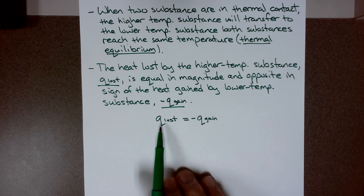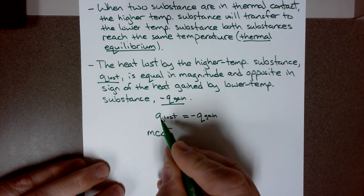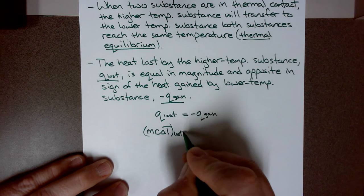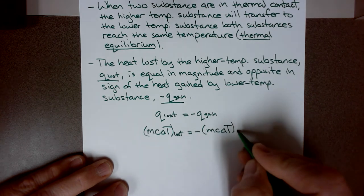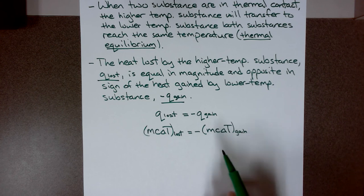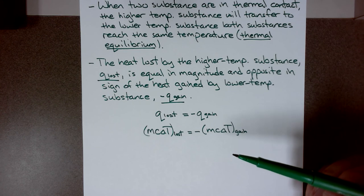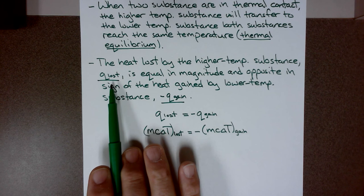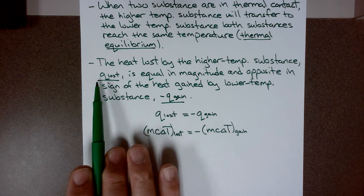Remember, for Q we can use the equation Q = MC∆T. So I can say the MC∆T of the substance that has lost heat is equal to the negative MC∆T of the substance that has gained the heat. If I put a piece of metal in water and the metal is at a high temperature, the metal will lose heat and go down in temperature, and the water will gain the heat and go up in temperature. This is a loss and that is a gain.